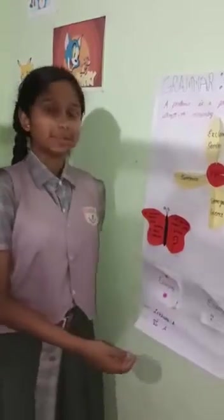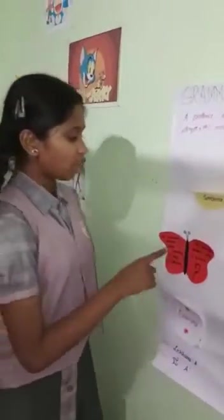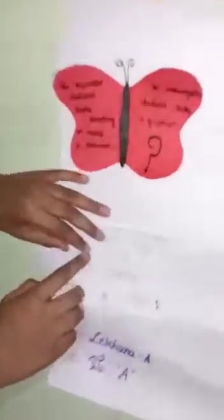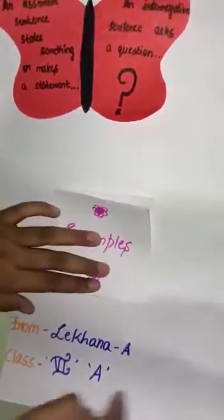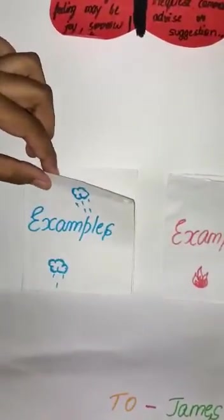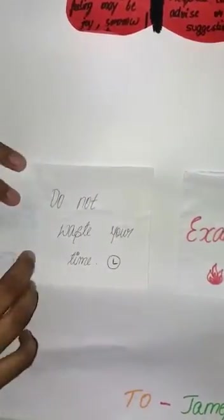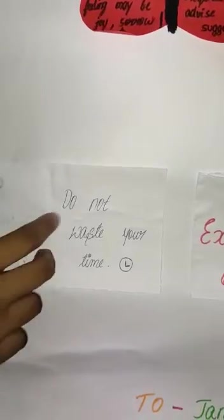Now, let us see about the examples of assertive sentence. She sang a melodious song. Example of interrogative sentence: Who got the highest marks? Now, examples of imperative sentence: Do not waste your time. Example of exclamatory sentence.